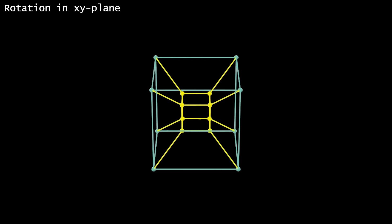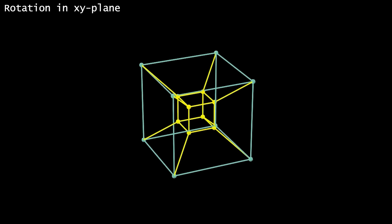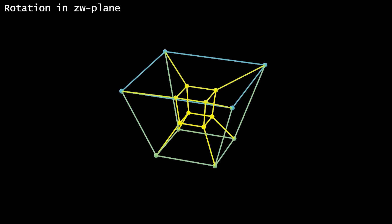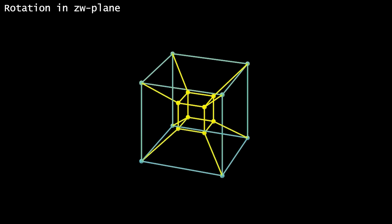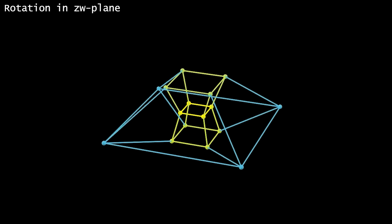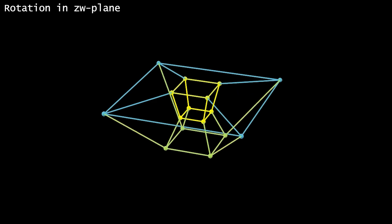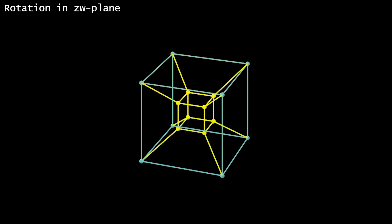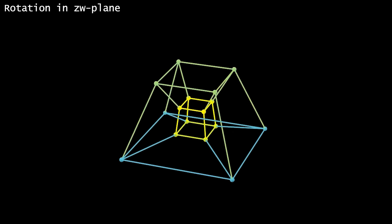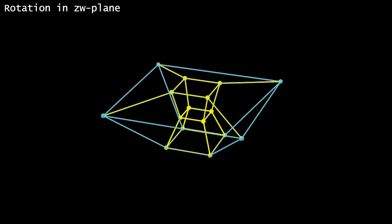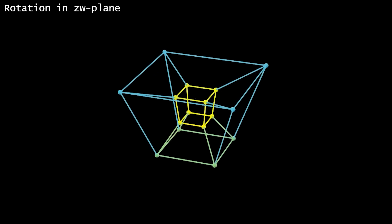For the tesseract, I can similarly do a rotation in the x, y plane, which looks basically the same as rotating the 3D cube did. But I can also do a rotation in the z, w plane, and that looks like this. Remember how in this projection we drew the second cube bigger? Well, the size is sort of a proxy for the fourth dimension. So in this rotation in the z, w plane, you can see points rotating through being on the larger square and on the smaller square.